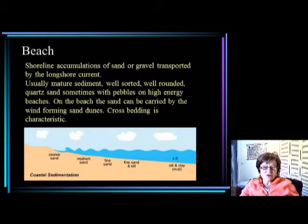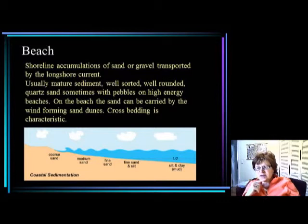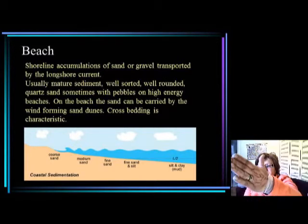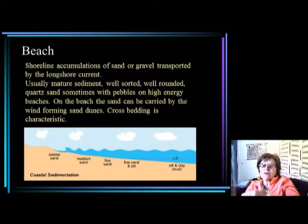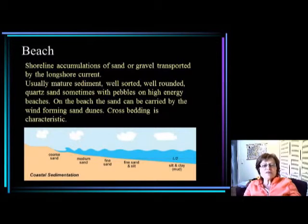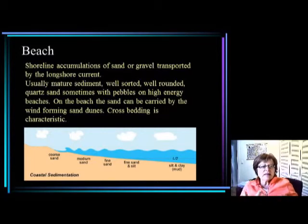Let's start with the beach. The beach basically forms because of the longshore current. Waves come in at an angle but the water can only return perpendicular to the shoreline, so the movement comes in at an angle and goes back straight — repeatedly — creating the longshore current. The longshore current carries sediment along the shoreline, and where there is more sediment than it can transport, you get a beach. The sand carried by the longshore current is well-sorted and well-rounded.